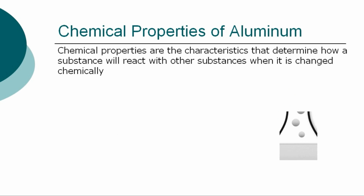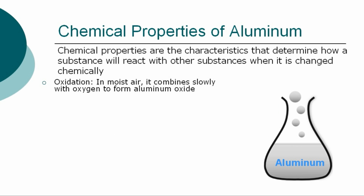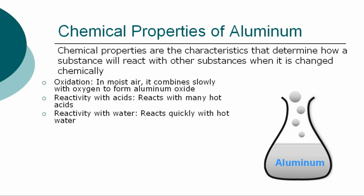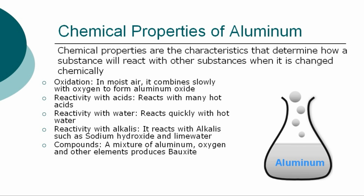The chemical properties are the characteristics that determine how aluminum will react with other substances when it is changed chemically. The chemical properties of aluminum are: oxidation — in moist air, it combines slowly with oxygen to form aluminum oxide; reacts with many hot acids; reacts quickly with hot water; reacts with alkalis such as sodium hydroxide and lime water. A mixture of aluminum, oxygen, and other elements produces bauxite.